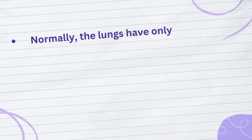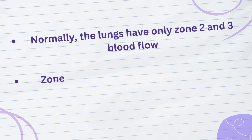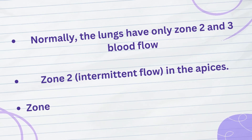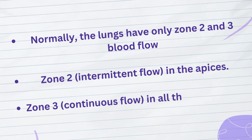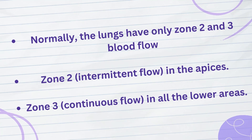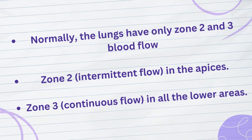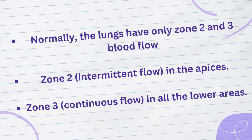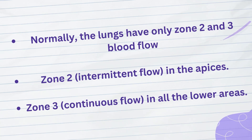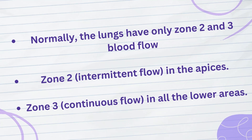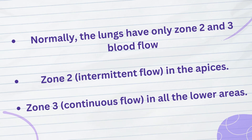Normally, the lungs have only zones 2 and 3 blood flow. Zone 2 intermittent flow occurs in the apices, and zone 3 continuous flow occurs in all the lower areas. Zone 2 blood flow begins in the normal lungs about 10 cm above the mid-level of the heart and extends from there to the top of the lungs. In the lower regions of the lungs, from about 10 cm above the level of the heart all the way to the bottom of the lungs, the pulmonary arterial pressure during both systole and diastole remains greater than the zero alveolar air pressure. Therefore, there is continuous flow through the alveolar capillaries, or zone 3 blood flow.